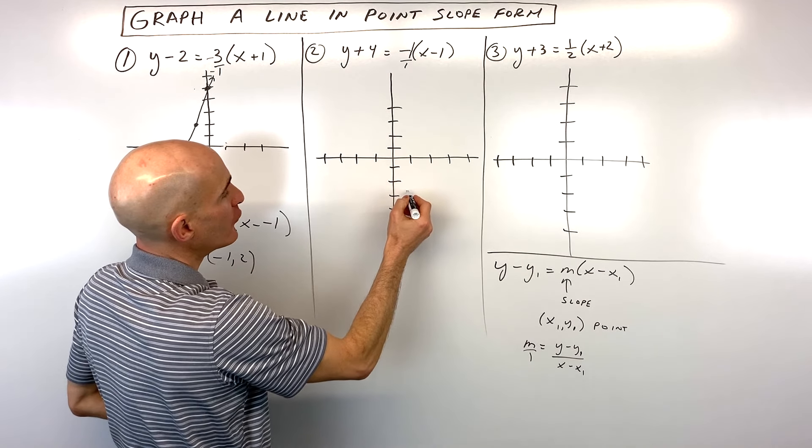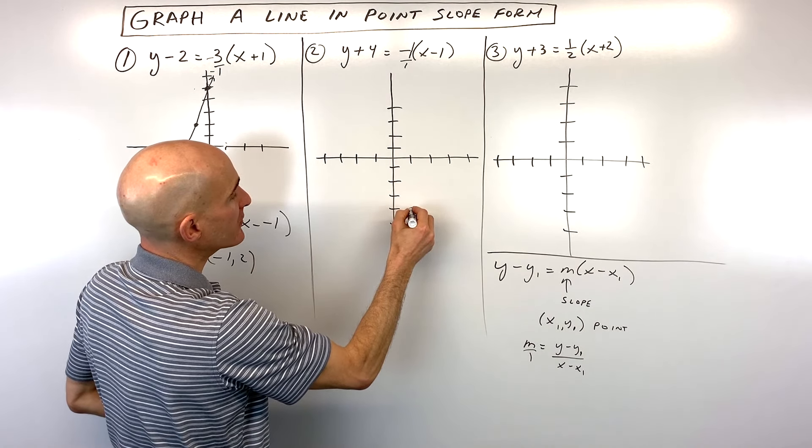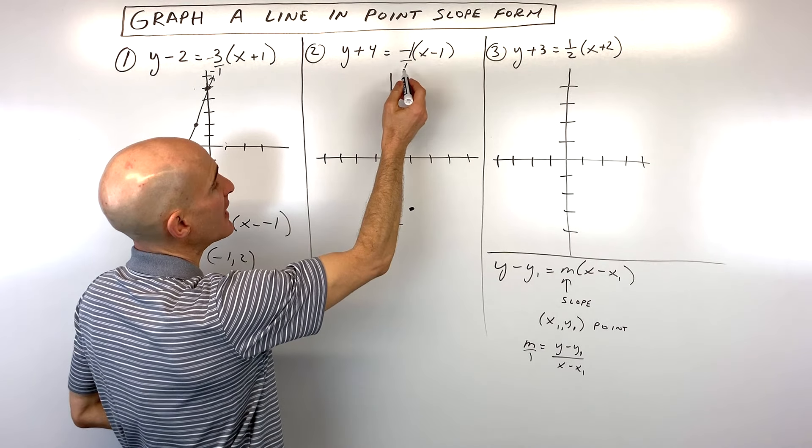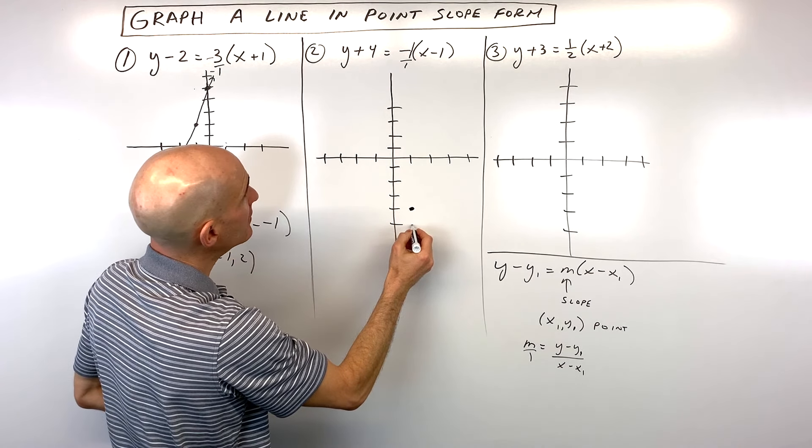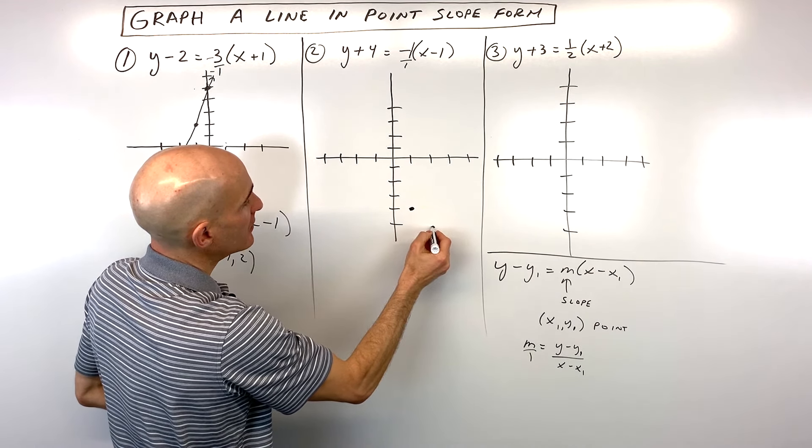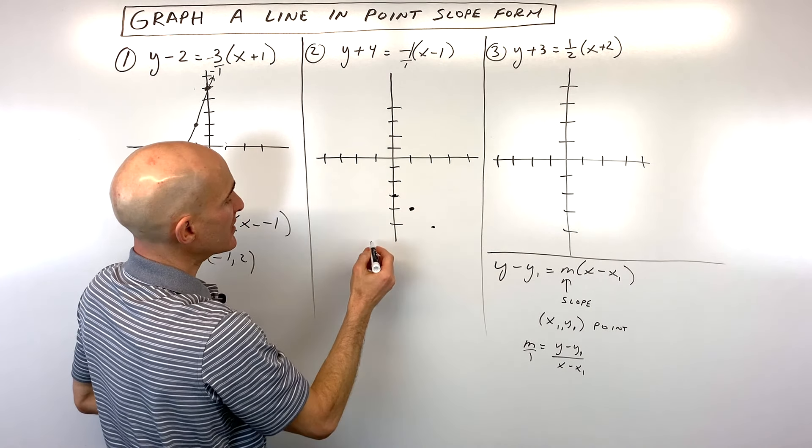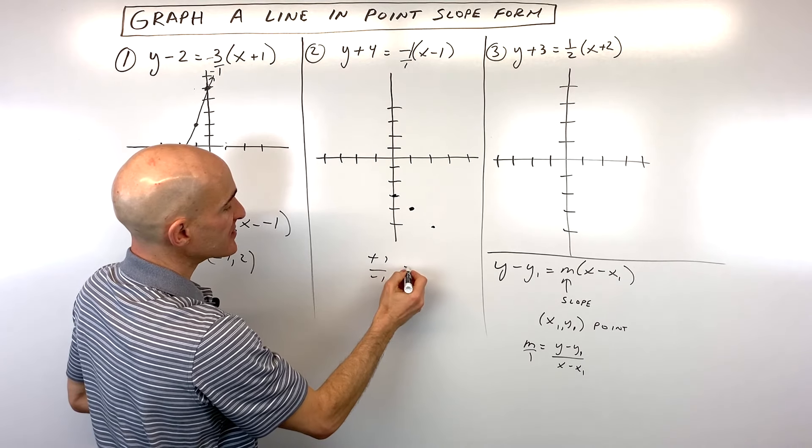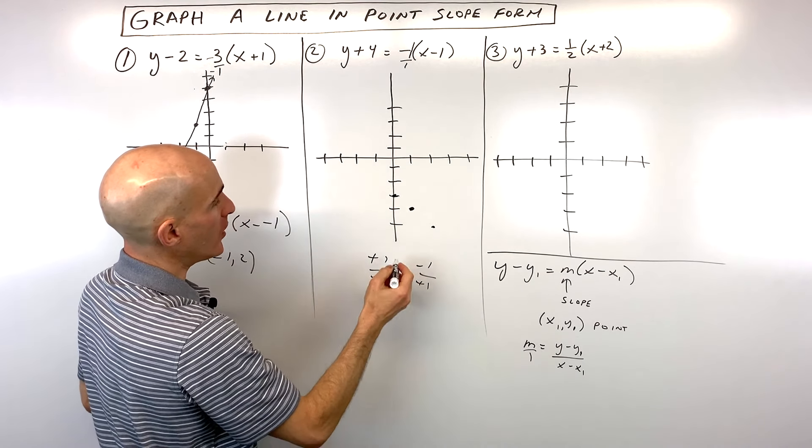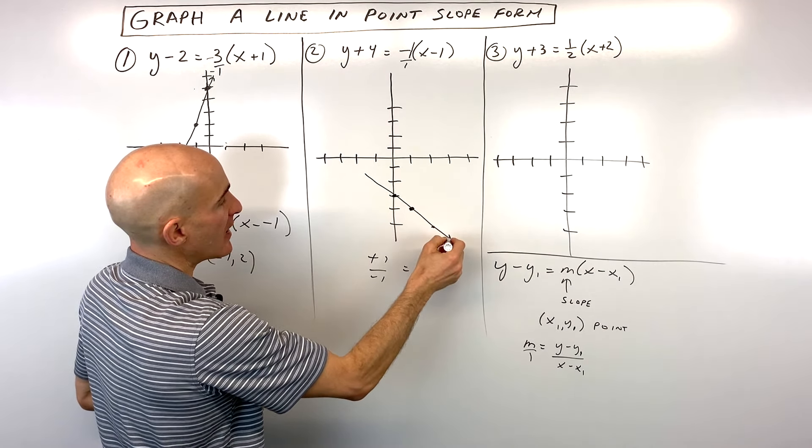So right 1, down 4. That's your point that the line goes through, and it has a slope of negative 1. So we're going to go down 1, right 1. And if you want, you can reverse that. You can go up 1 and left 1, because positive 1 over negative 1 is the same as negative 1 over positive 1. And so you can see there's going to be your line right there.